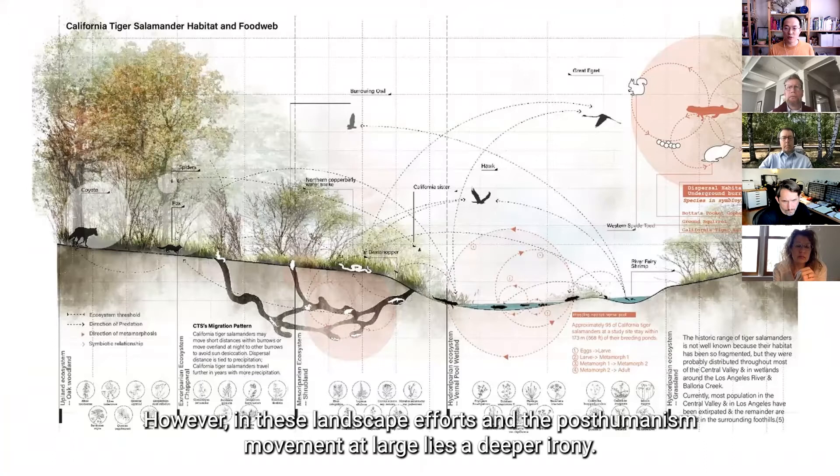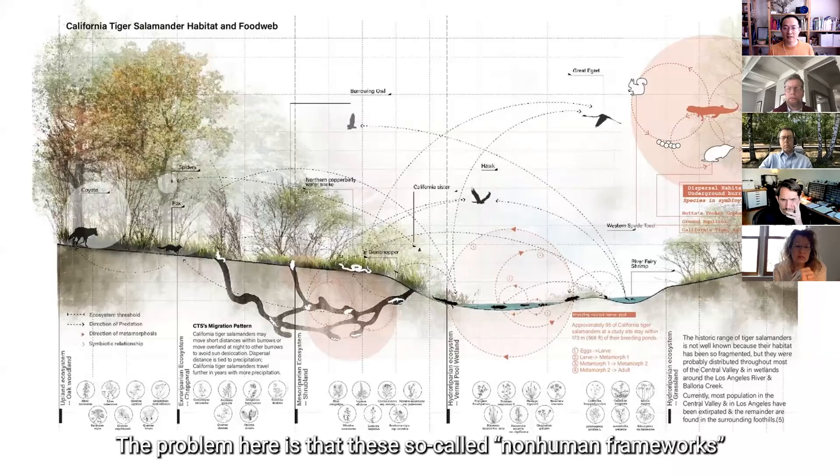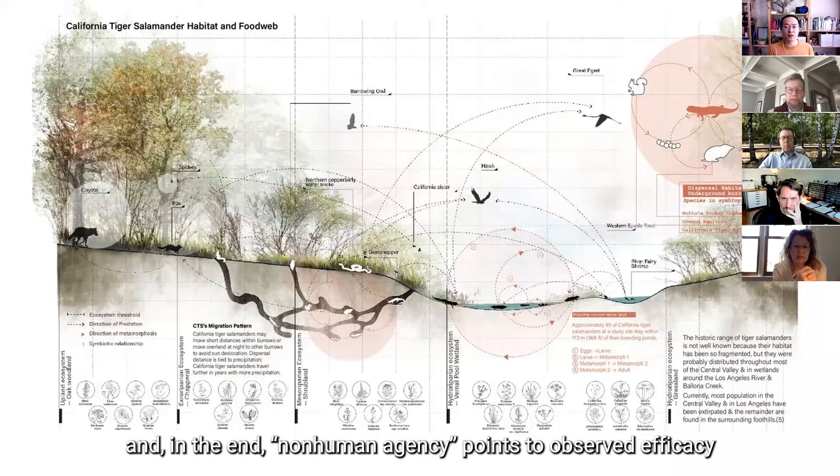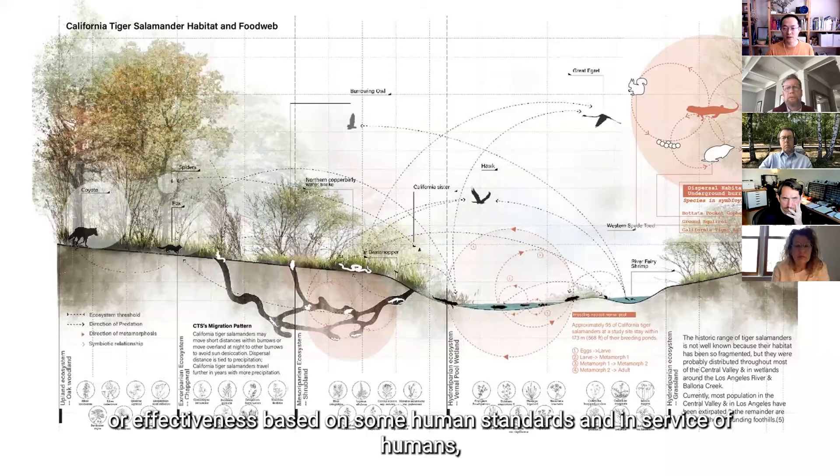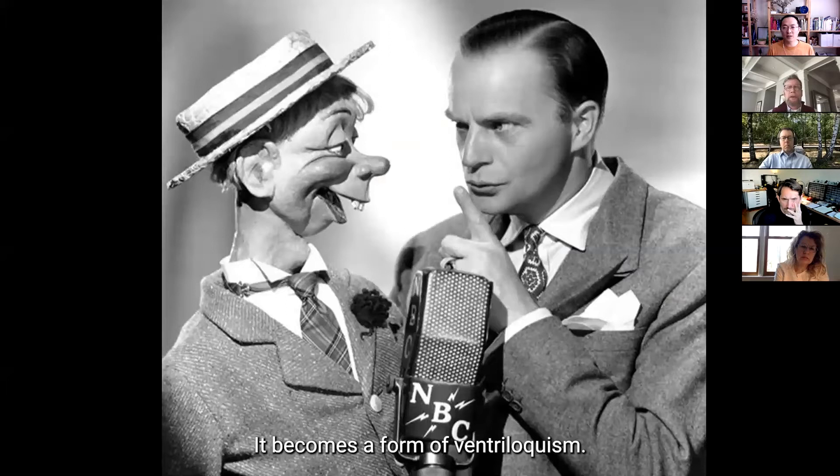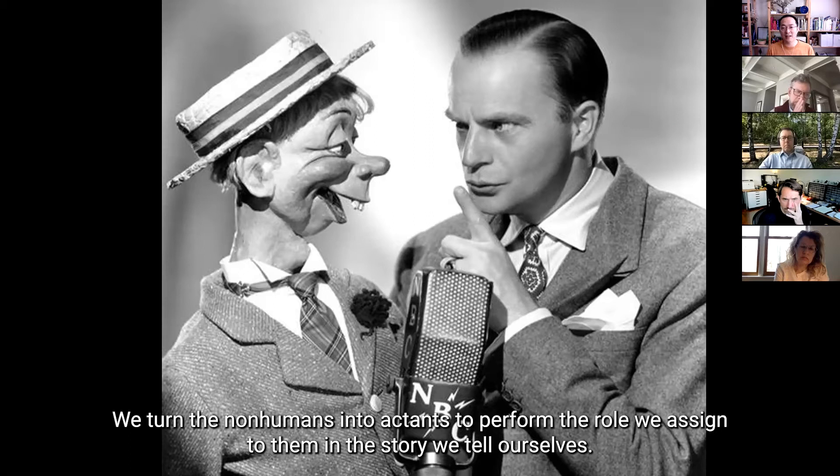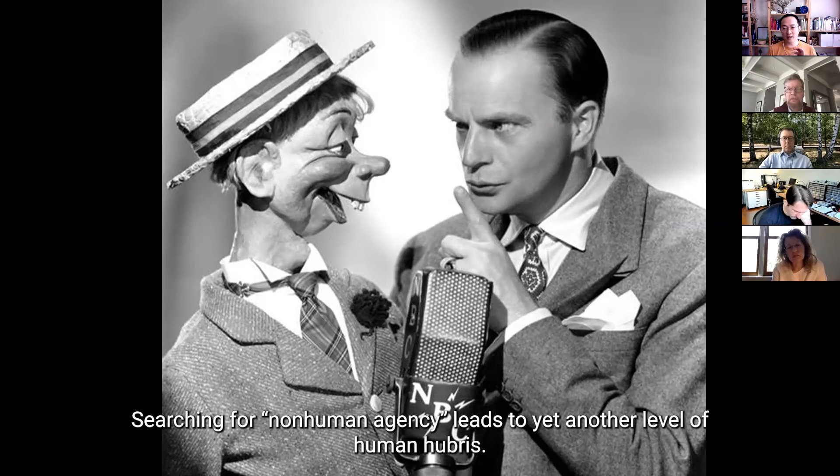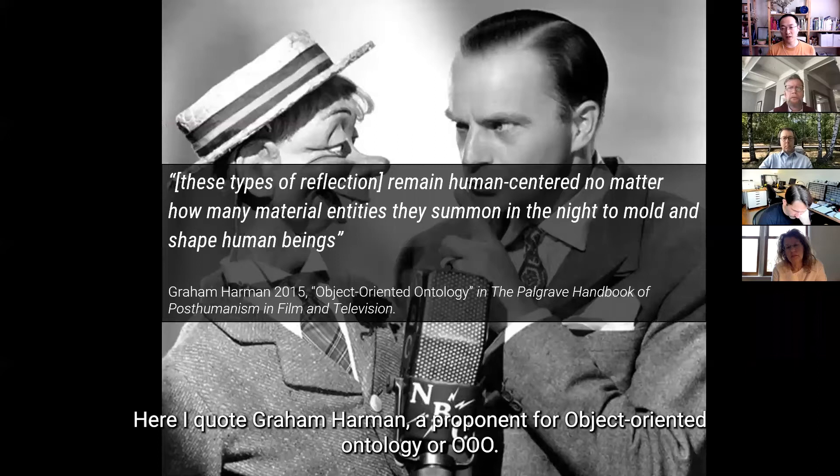However, in these landscape efforts or this kind of post-human movement at large lies a deeper irony here. So the problem here is that these so-called non-human frameworks turn non-human objects into actants in a human narrator's stories. And in the end, non-human agency points to observed efficacy or effectiveness based on some human standards and in service of humans, while the intrinsic value as a non-human being in itself is still largely outside these all-too-human frameworks. And in the end, it becomes a kind of ventriloquism.